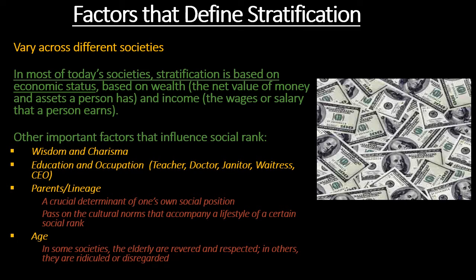Your income is what you bring in on a yearly basis — what your paychecks add to your bank account each year. Wealth is the overarching total of everything you own and what it's worth: your home, your car, any assets, stocks, and bonds. Some other important factors that influence social rank beyond wealth and income could be wisdom, charisma, education, and occupation.